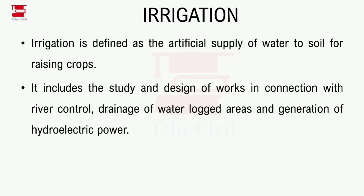As you all know, first, what is the irrigation definition? It is defined as the artificial supply of water to soil for raising crops. That is the irrigation process.